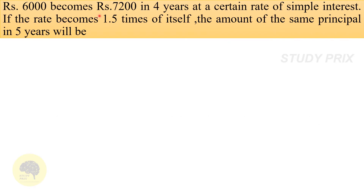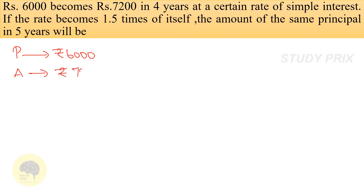Question 1: Rupees 6000 becomes rupees 7200 in four years at a certain rate of simple interest. If the rate becomes 1.5 times of itself, the amount of the same principal in five years will be? First write down the data. Principal is given as rupees 6000, it becomes total amount of rupees 7200 in four years, and we don't know the rate percentage.